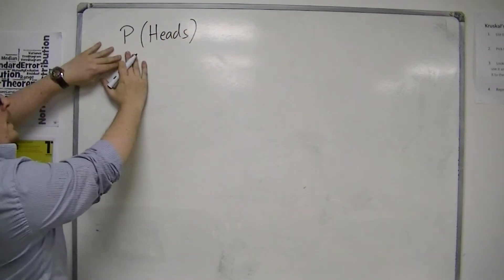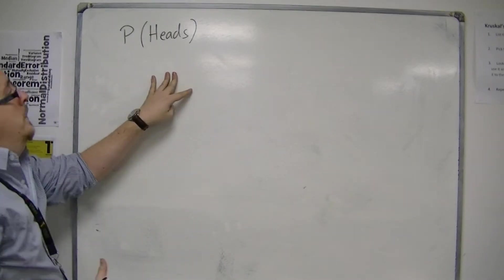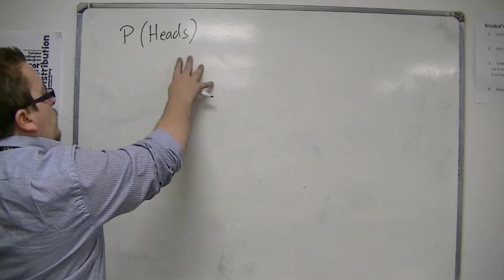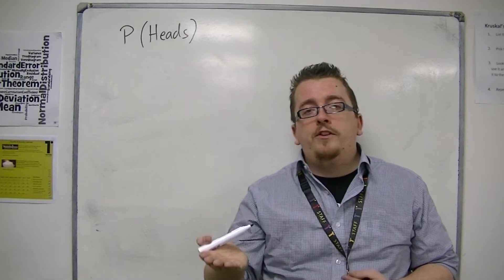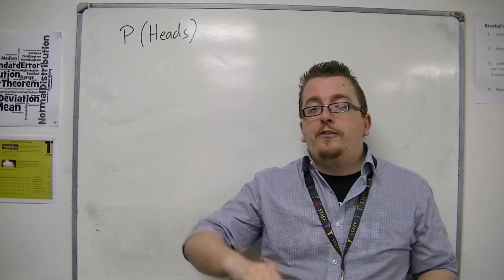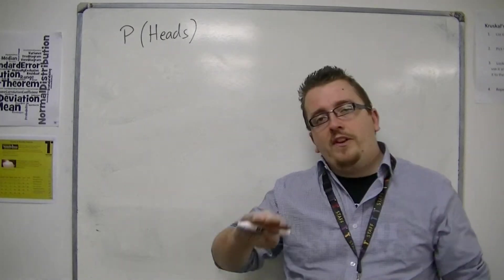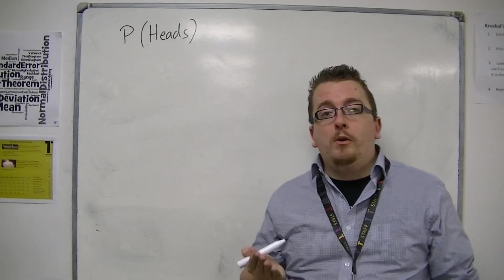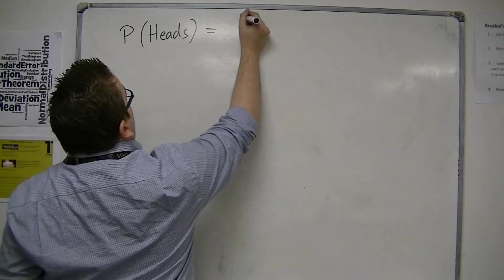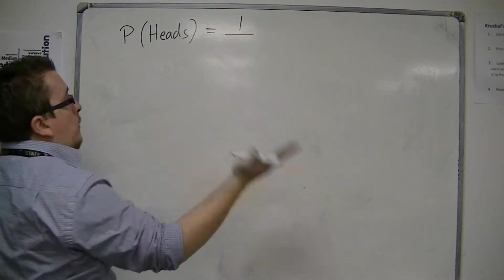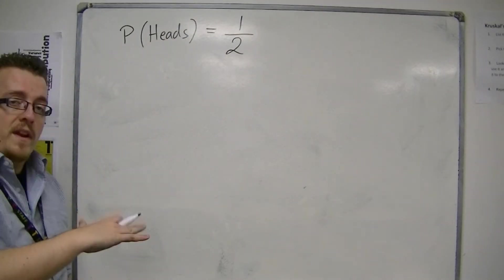To mean the probability of scoring a heads on one toss of a coin. So when you flip a coin, you know that there is either heads on one side or tails on the other, and so there are two possible options. And in order to get heads, I need only one of those to appear. So the probability of heads would be the one head that can possibly show up out of the two possible options. So one out of two.